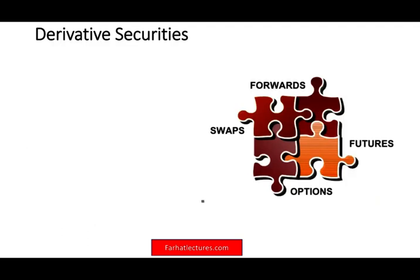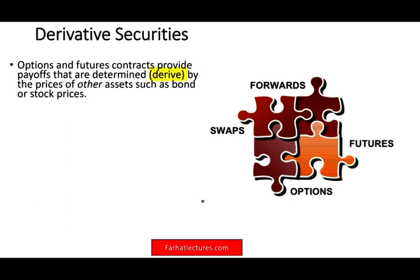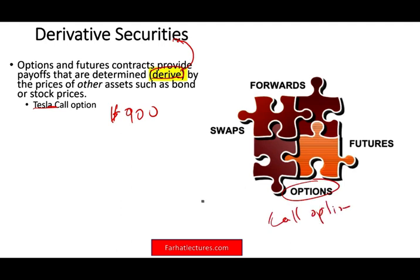The third major category is derivative securities — we are talking about options, forward contracts, and swaps. Options and forward contracts provide a payoff that is derived — that's why they're called derivative securities — by the price of other assets such as bonds or stocks. For example, let's assume you want to buy Tesla stock, which is trading at $900 today. You're not ready to buy now, but you are bullish. You can buy a call option — you pay someone today $30 to buy Tesla at $1,000 in the next six months.